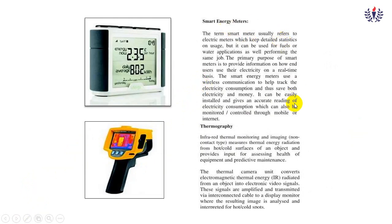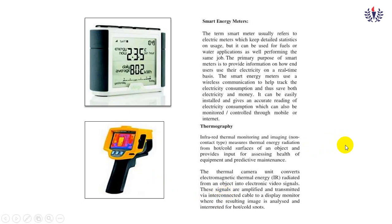The smart energy meter shows current energy usage, tariff, and daily averages — we will study this in detail in module 5. Thermography uses thermal imaging: based on temperature, different colors appear on screen — orange or reddish-orange indicates more heat, and blue indicates cold spots. It works based on electromagnetic thermal imaging, where IR radiation is observed to identify hot and cold spots. Cold areas appear blue, hot areas appear red.